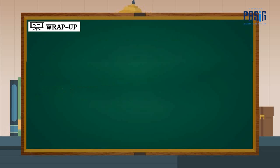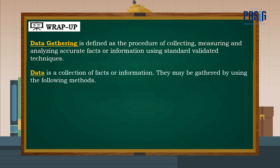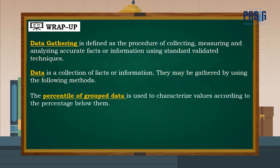To summarize our lesson, please remember the following: Data gathering is defined as the procedure of collecting, measuring, and analyzing accurate facts or information using standard validated techniques. Data is a collection of facts or information, and may be gathered by using the following methods. The percentile of group data is used to characterize values according to the percentage below them.